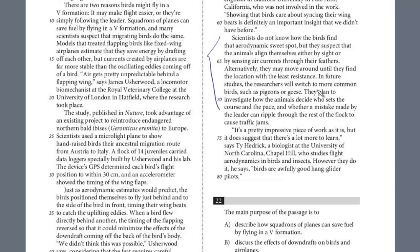In future studies, researchers will switch to more common birds such as pigeons or geese. They plan to investigate how the animals decide who sets the course and the pace and whether a mistake made by the leader can ripple through the rest of the flock to cause traffic jams. So they don't know how they find this optimal placement, but they suspect that they do it by sight or by sensing the currents.